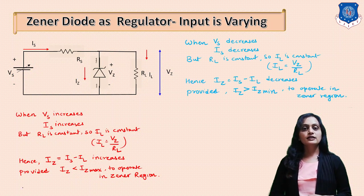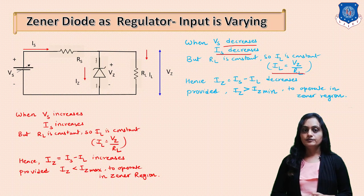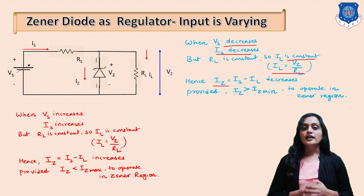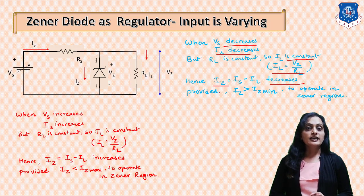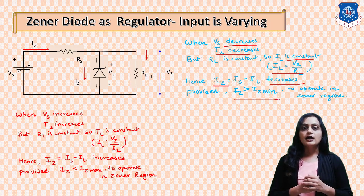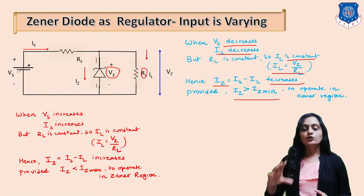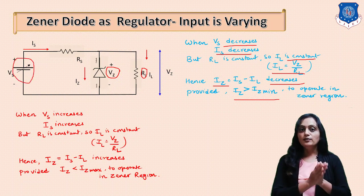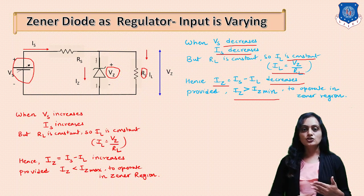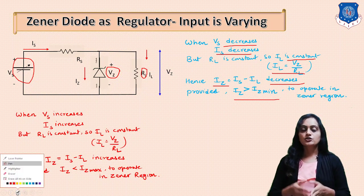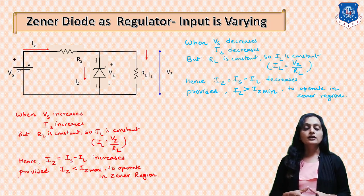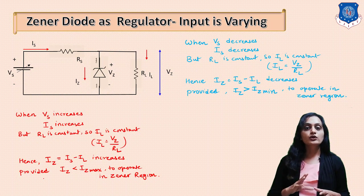When VS decreases, IS also decreases. The current through RL, which is IL = VZ / RL, remains constant. Due to that, the Zener current IZ will decrease, and this IZ should be greater than IZ minimum to maintain constant voltage across the Zener diode. This provides a constant voltage across the load — showing that even if the input is varying, the voltage across the load remains constant. This is how the Zener diode provides voltage regulation.